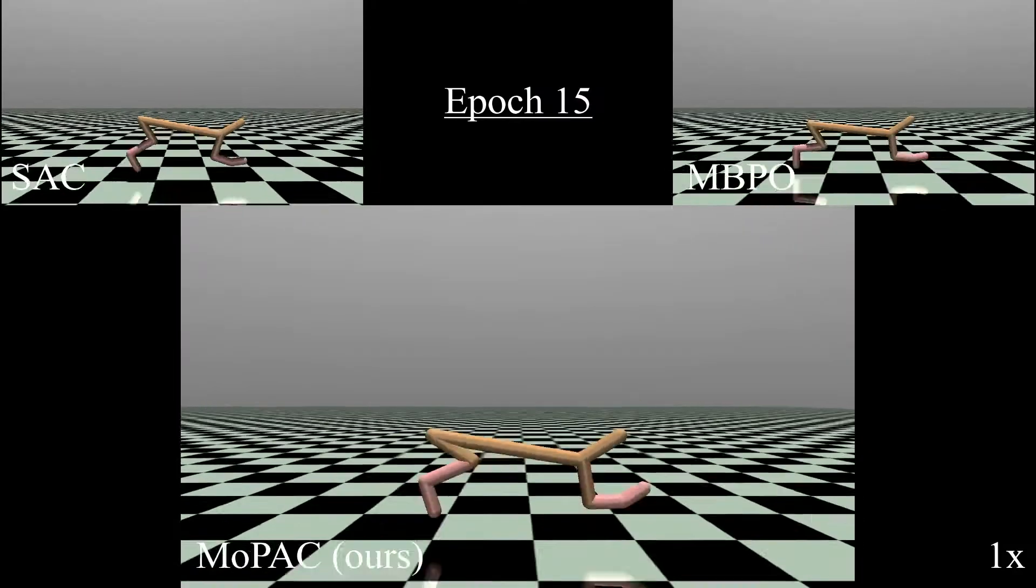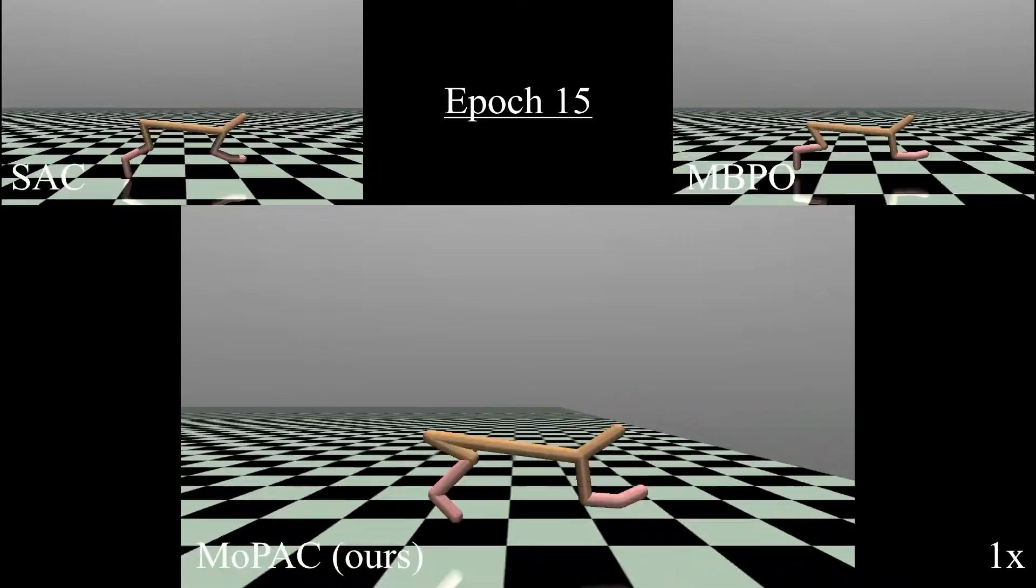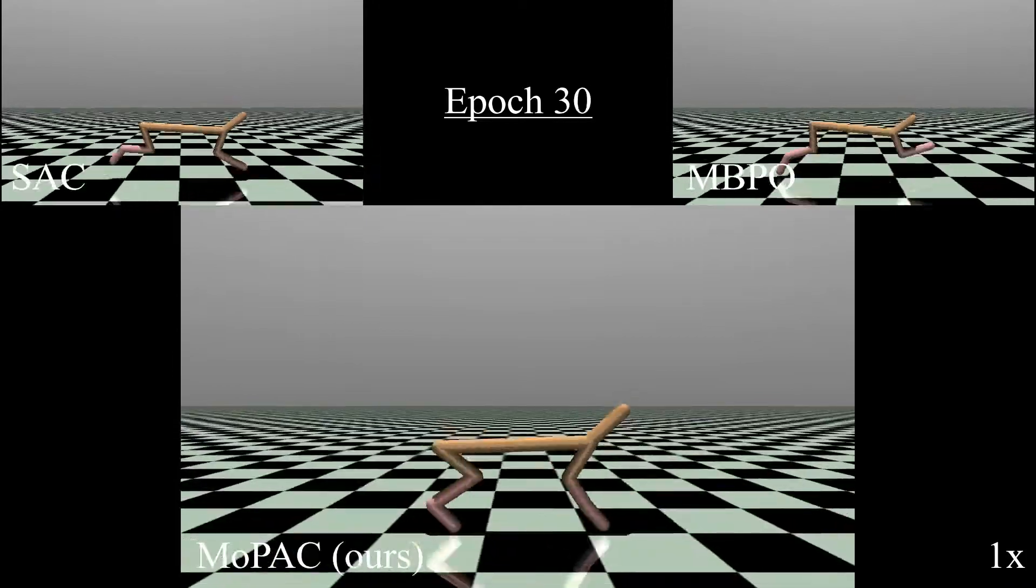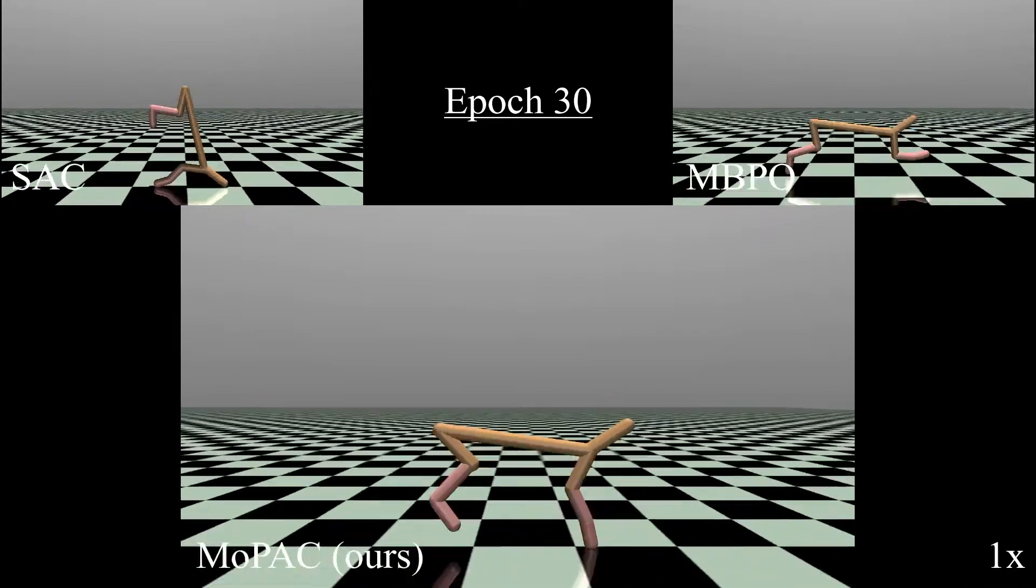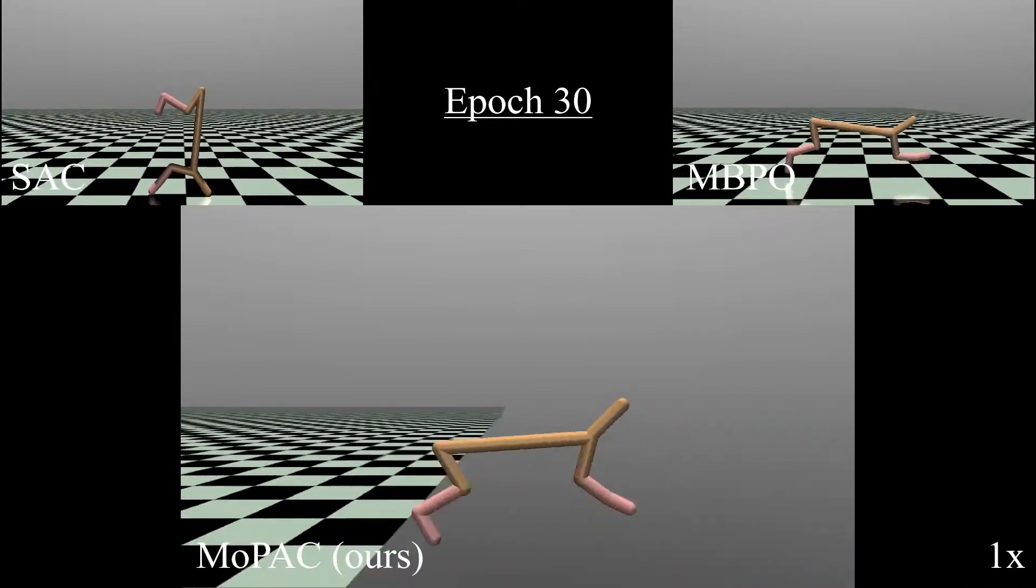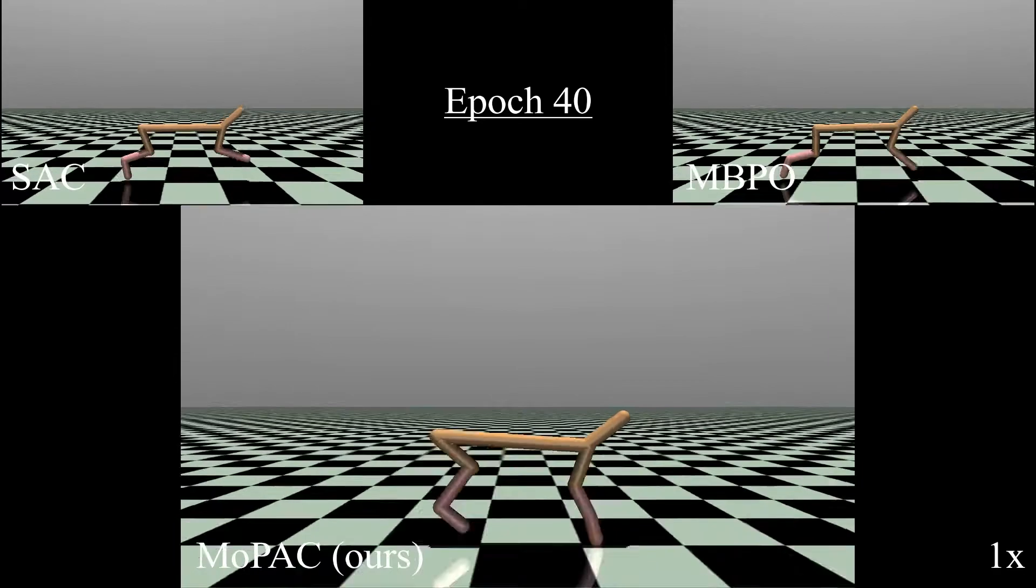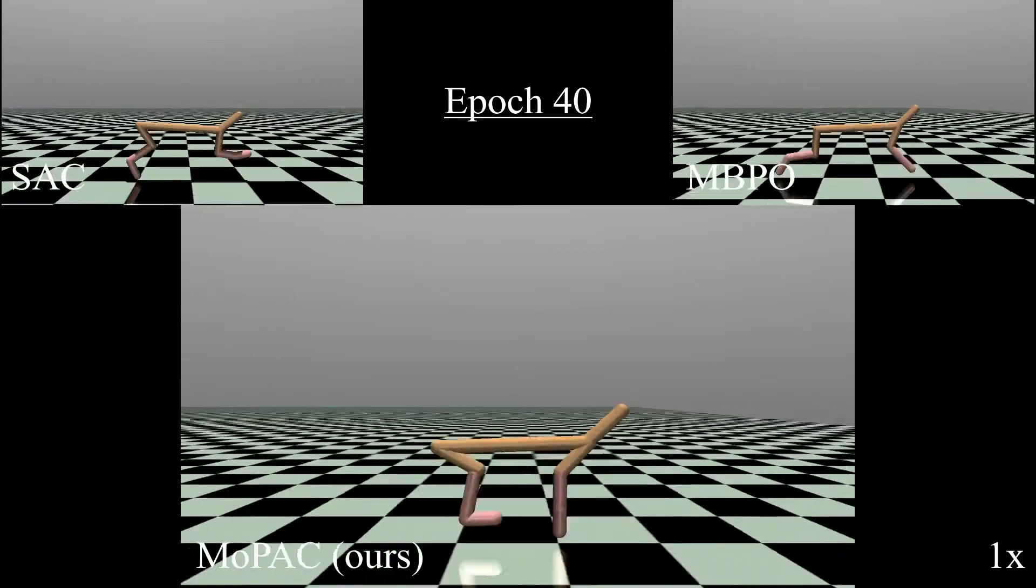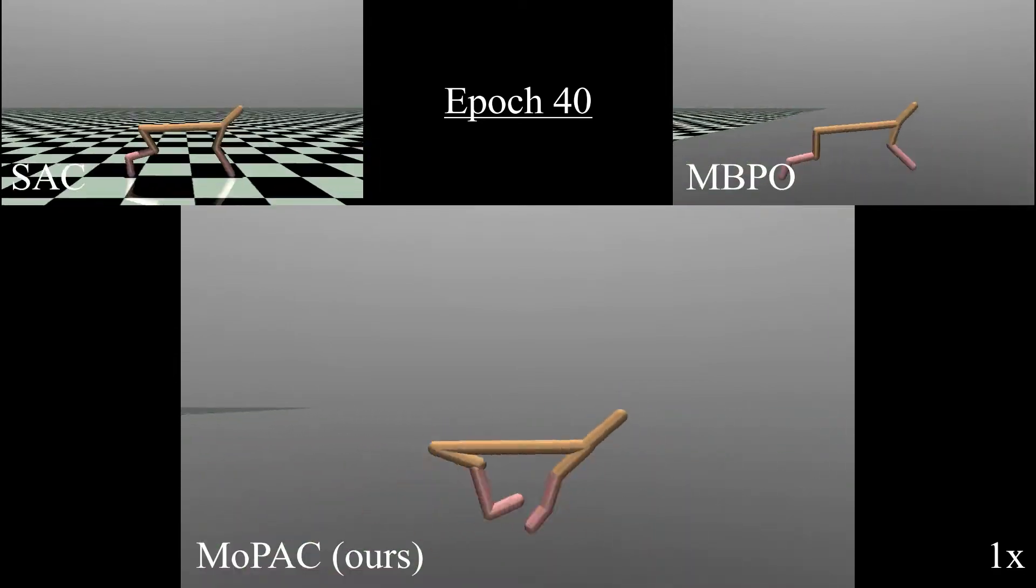We compare our algorithm with two different state-of-the-art RL baselines, soft actor-critic and model-based policy optimization. First, we demonstrate the increased learning speed in the half-cheetah Mujoco environment. We present episode evaluations for 15, 30, and 40 epochs, noting the increased performance of MOPAC.